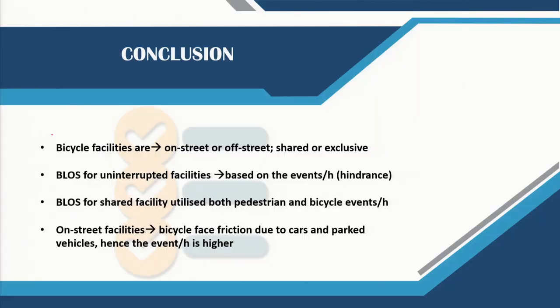We have shown three different types of facilities and how to calculate the bicycle level of service for each using the HCM 2000 methodology. In conclusion, bicycle level of service depends upon the hindrance faced by the bicyclist. The measure of effectiveness of bicycle level of service as per HCM 2000 is the number of events per hour — which can be passing events or opposing events. Thank you.